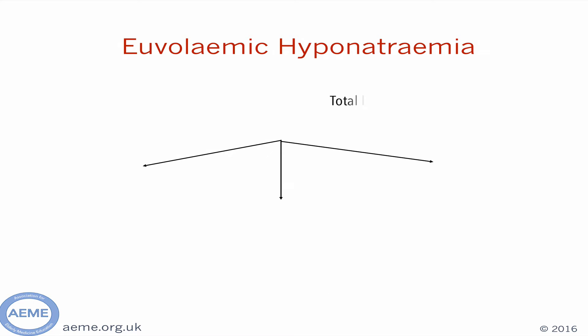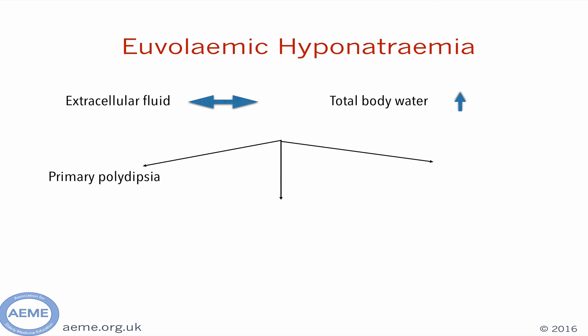The euvolemic patient with low sodium is often more difficult to assess. Total body water is increased, though they may have a normal amount of fluid outside the cells. One cause is from excessive water consumption, or primary polydipsia. Other causes are endocrine disease, such as Addison's or hypothyroidism, or more commonly, antidiuretic hormone release due to intercurrent illness or underlying pathology. ADH is released in many acute circumstances, and includes the syndrome of inappropriate ADH release, which we will discuss.